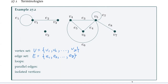So what is a loop? A loop is where we have a vertex with an edge going straight back, looping back on itself onto that vertex. So what are our loops here? Our loops are our edges E1 and E7.